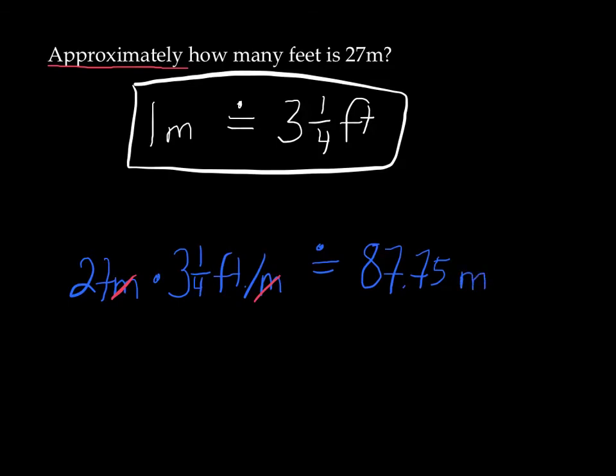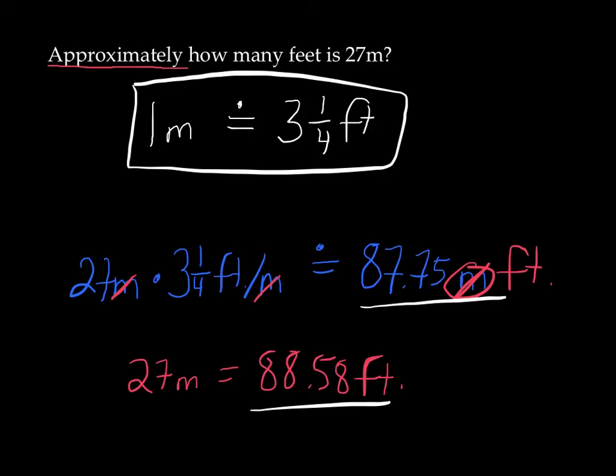Now you might not be satisfied with an approximate amount. The real amount, well 27 meters, is really 88.58 feet. Now take a look at those two numbers. You notice how close they are together. 87.75 versus 88.58. We can arrive at 87.75 quite easily because of a quick, simple conversion. 88.58 is going to require a more precise conversion table. And if you want more precise conversions, like you're building a building or something like that, you don't want to be off by a couple of feet or a couple of inches, well, you want to make sure that you use a more precise conversion.